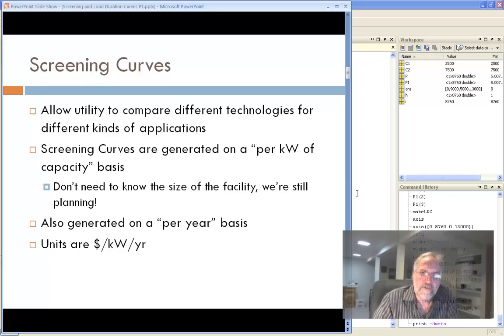So what are screening curves? Well, they allow utilities to compare these different technologies and look for the best combination of them. They're written and drawn and computed on a per kilowatt of capacity basis. In other words, we don't know when we start out how big a plant we're talking about. But we have a pretty good idea when we're looking at the different technologies about how much they cost on a per kilowatt basis. So you've got a thousand megawatt plant. Well, that's a million kilowatts. So you take the number and multiply it times a million and go forward. We also then split it up on an annual basis per year.